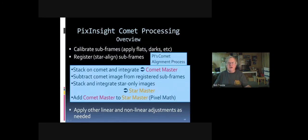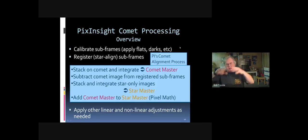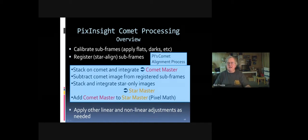If you have questions on capturing comets, submit them and they'll be addressed at the end or during breaks. Now let's move to comet processing. I won't talk much about taking the frames or calibrating the sub-frames with flats, darks, and biases. After calibration, you register all sub-frames so the stars align — but when you do that, the comet smears because it's moving from frame to frame. That's where PixInsight's Comet Alignment process comes in.